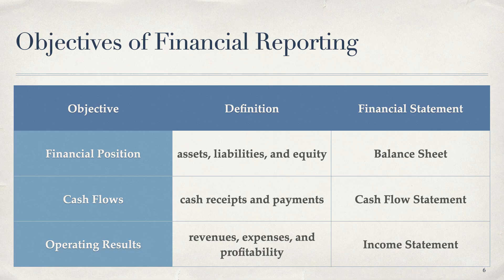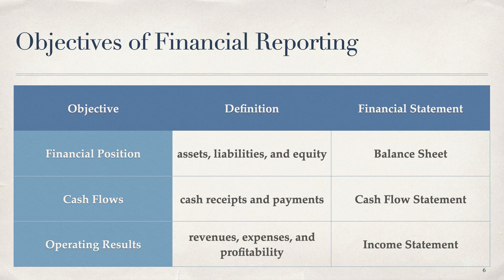Let's look at the objectives of financial reporting. We have three main objectives. The first objective is we want to know the financial position of a company or entity, so we're going to look at things like assets, liabilities, and equity — and the financial statement we look at is the balance sheet. The second objective is cash flows — cash receipts and cash payments — which is what's on the cash flow statement. We want more cash receipts than cash payments.